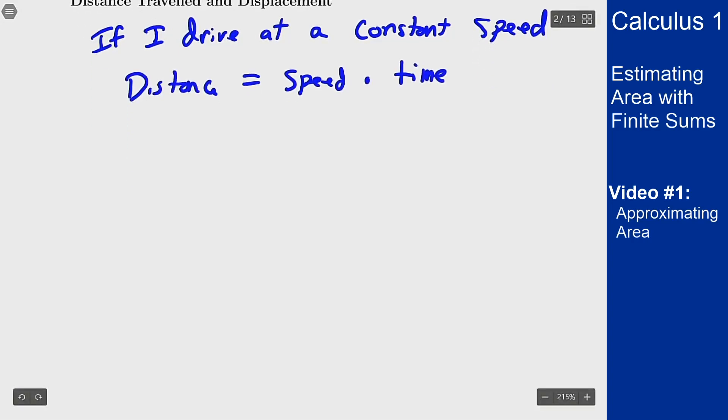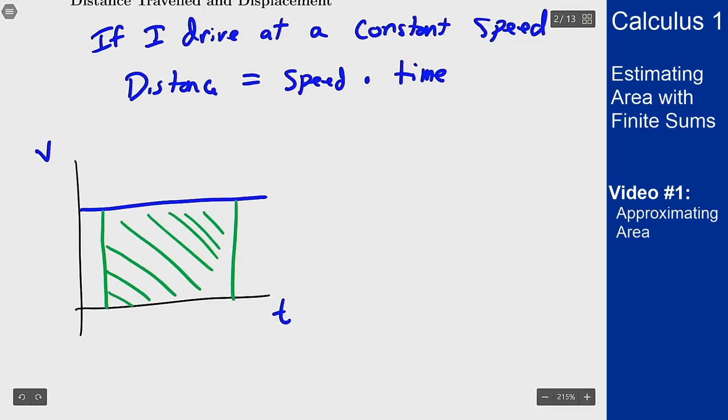In terms of a picture if I were to draw out a graph with velocity on this axis and time on this axis, if I go at a constant speed then my distance traveled between these two points in time is just the area of this rectangle because it's time times speed.